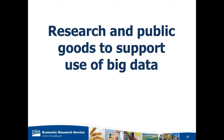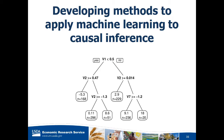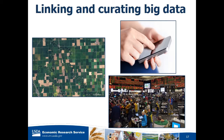Let me conclude by talking about some research and public goods to support the use of big data. We've got some research being done more broadly on new methods to fit models using machine learning, allowing the data itself to identify the relationships you can observe. It's not going to work for every problem, but more tools are better. Also, developing methods to apply machine learning to causal interests is important. Unstructured model methods don't tell you the links between variables and what's driving the outcome, but there is research being done. This figure shows a causal tree which automatically selects subgroups for heterogeneous treatment effect estimation, from Athey and Imbens - one of our speakers later today.